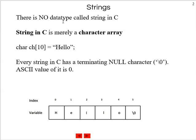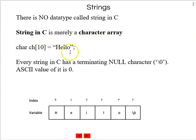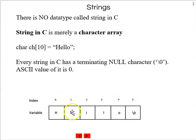There is no data type called string in C. A string is just a character array. If you look at it, there is a character array of 10 characters here — it allocates 10 bytes of memory. You can store a string like this: H-E-L-L-O. Here is how it stores in memory: H in 1 byte, E in 1 byte, L in 1 byte, L in 1 byte, O in 1 byte. This is how hello gets stored.